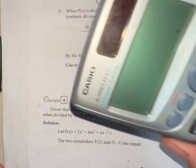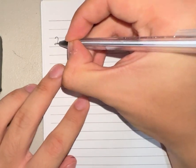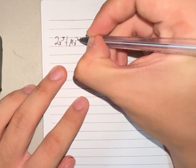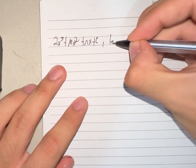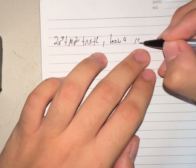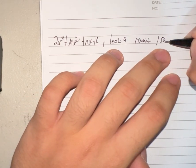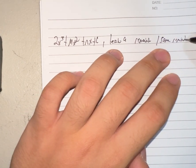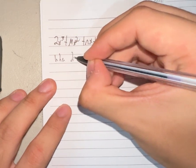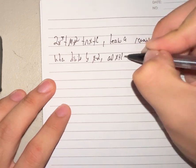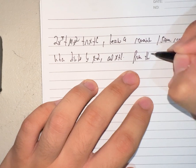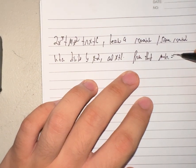So yeah, let's head on over to it. We have our expression 2x cubed plus mx squared plus nx plus c leaves a remainder, same remainder when divided by x minus 2 and x plus 1. Prove that m plus n is equal to negative 6.